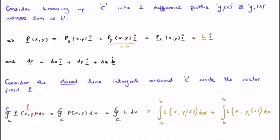So, we get no component from dy j hat or dz k hat. So, our closed line integral, going anti-clockwise, simply becomes L dx.